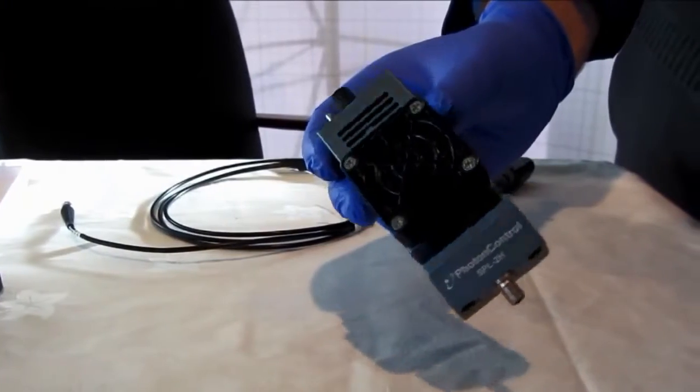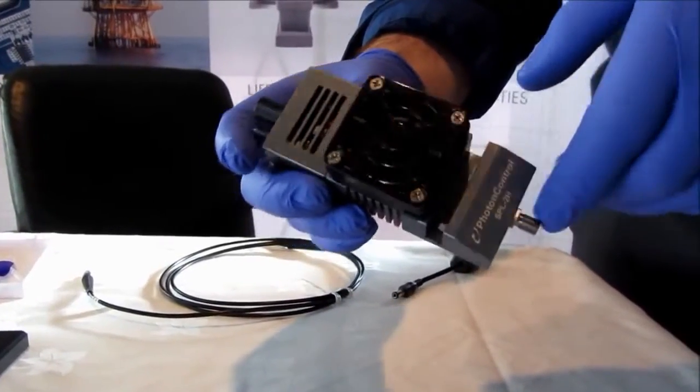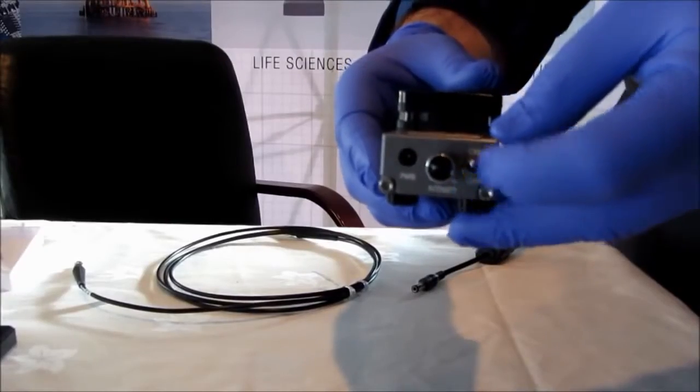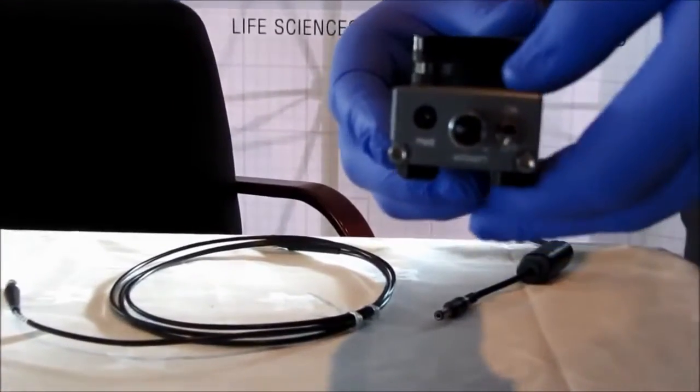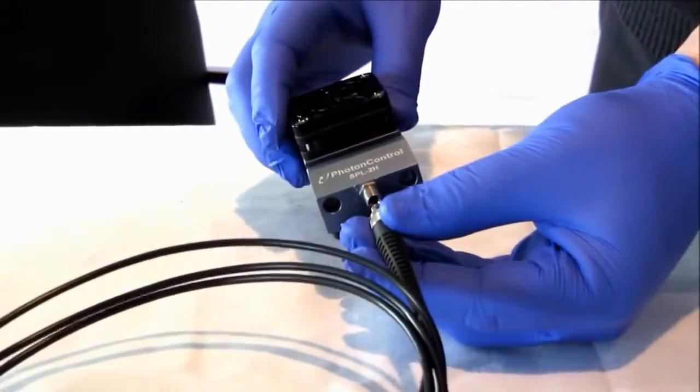Key features for the tungsten halogen light source is an integrated cooling fan which allows for a higher light output, a dimmer control for fine tuning of output intensity, an inline filter holder to customize output wavelength. Let's go ahead and connect the power source and then connect the SMA fiber patch cord.